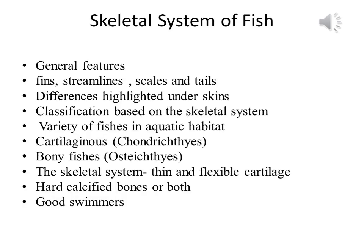We should know about the skeletal system of fish. General features of fishes include fins, streamlines, and scales and tails. But differences are highlighted under their skin, hence classification is much easier based on the skeleton system. A variety of fishes is found in aquatic habitat. Some may be cartilaginous or bony fishes. The cartilaginous fishes are known as chondrichthyes and the bony fishes known as osteichthyes.